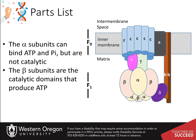The alpha subunits are not catalytically active, but can bind to ATP, ADP, and magnesium. The beta subunits are the catalytically active subunits that produce ATP from ADP and inorganic phosphate. While the stator remains still, the F-naught domain can spin in a counterclockwise direction due to the proton motive force. The axle subunits, gamma and epsilon, also spin counterclockwise and cause changes in the F-1 domain that lead to the synthesis of ATP.